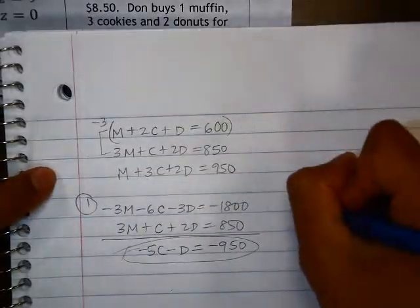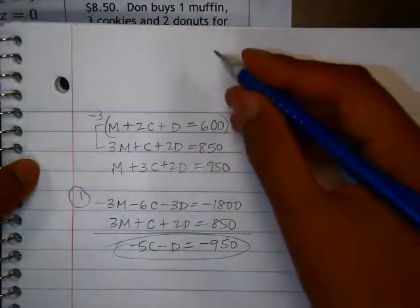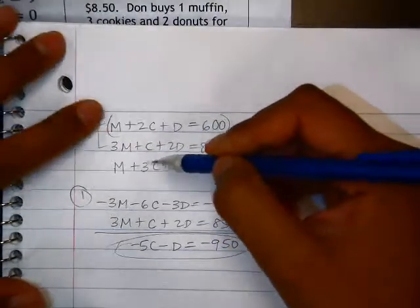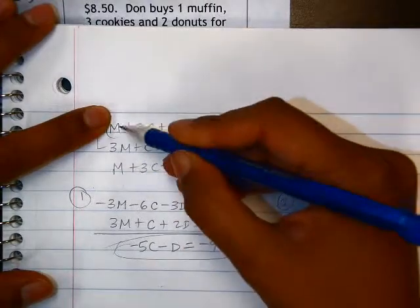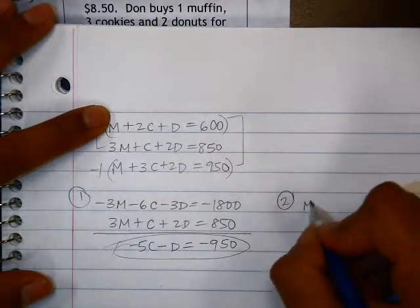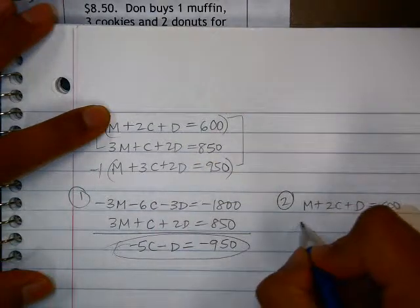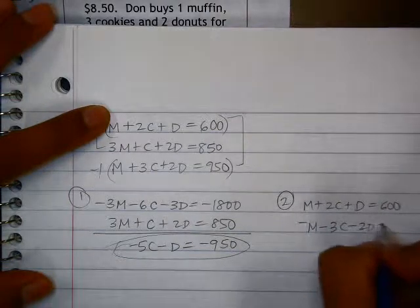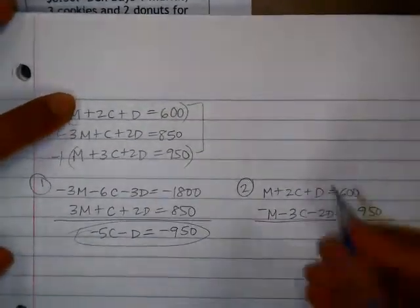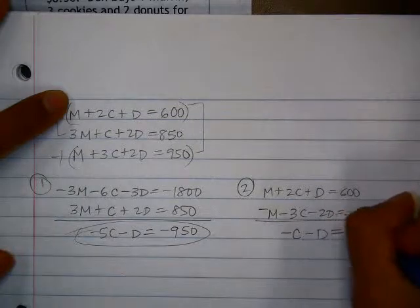Step two is to do the same process but combine a different pair of equations and eliminate the M again. So I'm going to take the first and the last equation, the original equations there. That means to eliminate the M, I need to multiply one of them by a negative 1. So that last equation becomes negative M minus 3C minus 2D equals negative 950. Adding those together, we get negative C minus D equals negative 350.